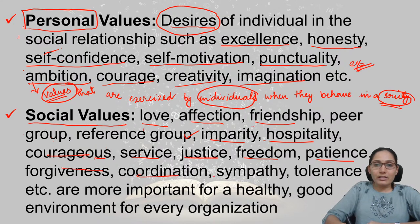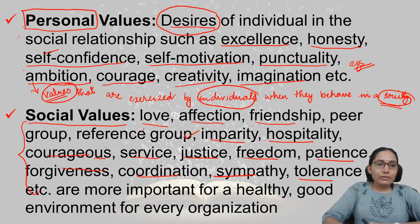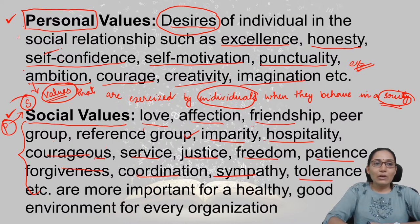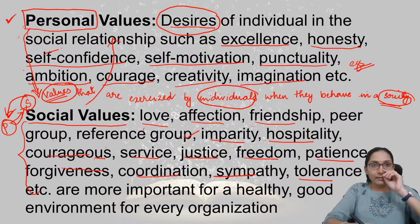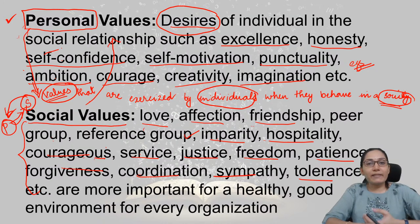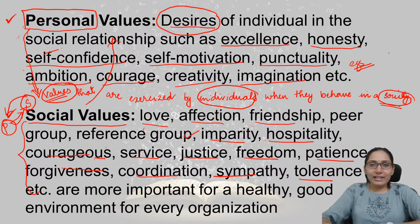Examples of social values include love, affection, friendship, peer group, impartiality, hospitality, courage, service, justice, freedom, patience, forgiveness, coordination, sympathy, and tolerance. It doesn't mean that a personal value cannot also be a social value — they can be interchangeably used. Sometimes personal values become social values in some contexts, and social values can also become personal values. There is no clear-cut division between the two.